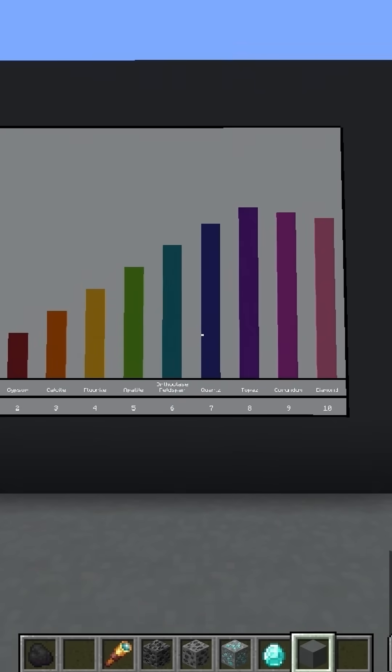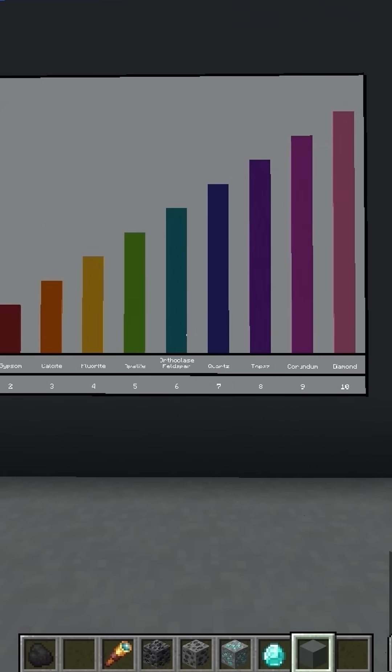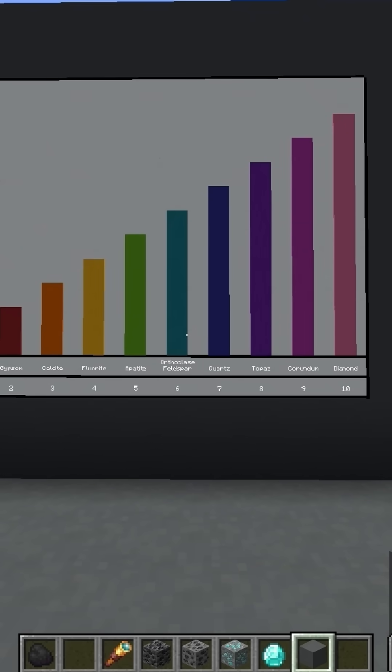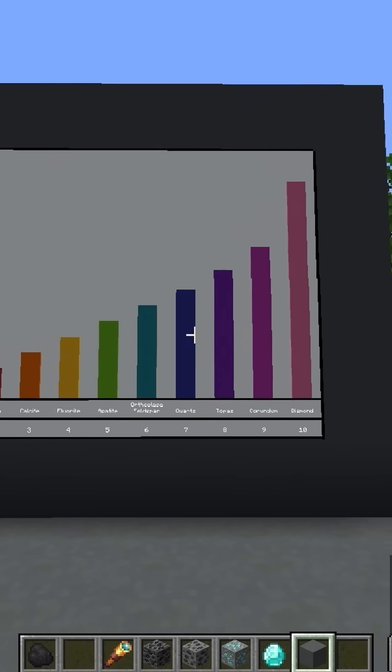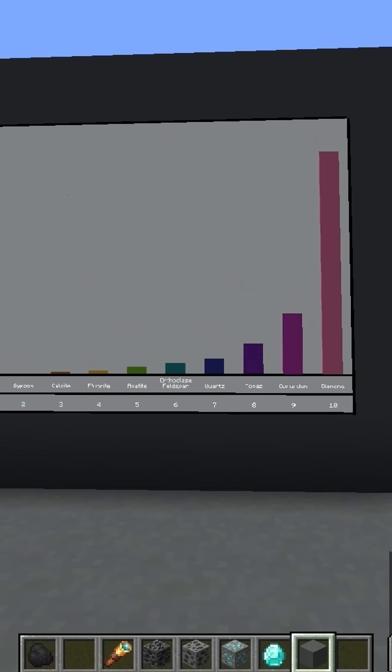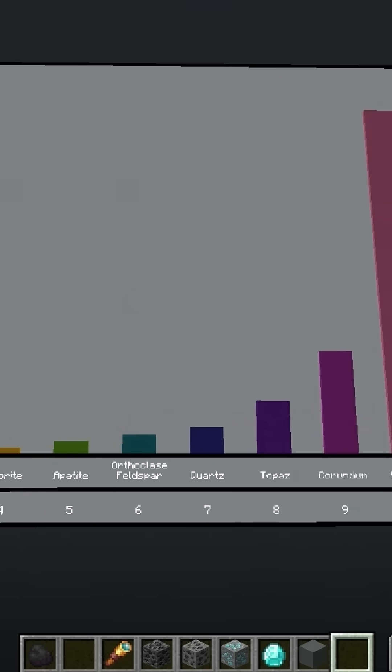But diamonds being a 10 is a bit arbitrary, because this is a qualitative scale, not a quantitative scale. If we compare some quantitative values for hardness for these same minerals, diamonds are nearly four times as hard as corundum, and there are only a few other rare minerals that even get close to diamond, and nothing really beats it.